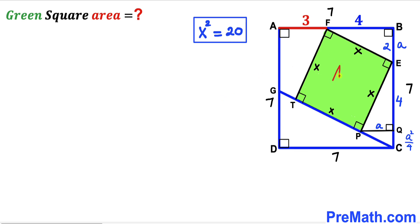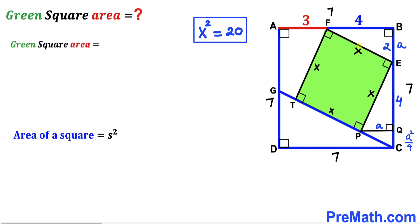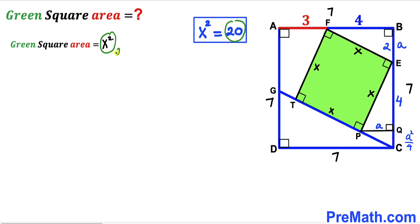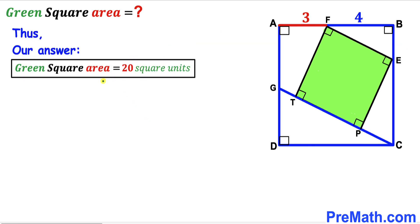For the final step, the area of the green shaded square equals S squared, where S is the side length X. So area equals X squared, and since X squared equals 20, the area of the green shaded square is 20 square units. After all calculations, the area of the green shaded square EFTP turns out to be 20 square units. Thanks for watching, and please subscribe for more exciting videos.